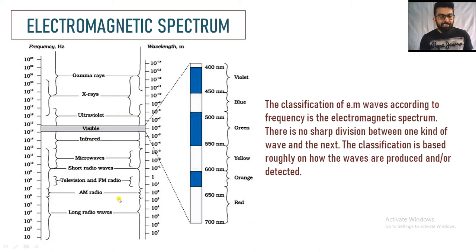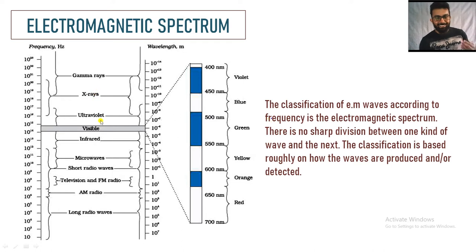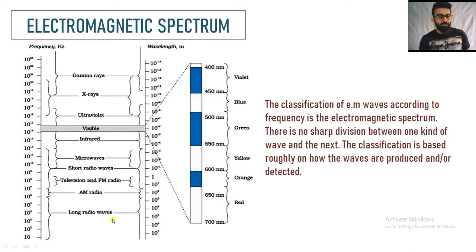If you look at this chart, you see gamma rays, X-rays, ultraviolet, visible, infrared, microwaves, short radio waves, television, FM radio, AM radio, and long radio waves. So we have to name all these electromagnetic waves — this is the name of each wave.